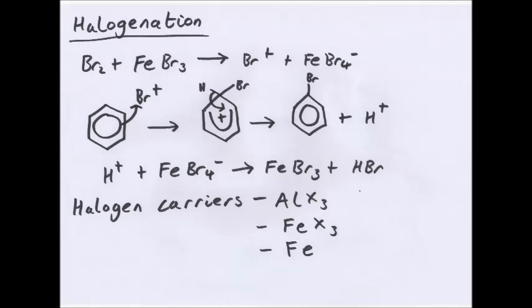Now what happens here is that if you add bromine to FeBr3, you get a Br+, the electrophile, plus FeBr4-. It's essentially FeBr3 here is a catalyst, and it works exactly the same with, if you had AlBr3.